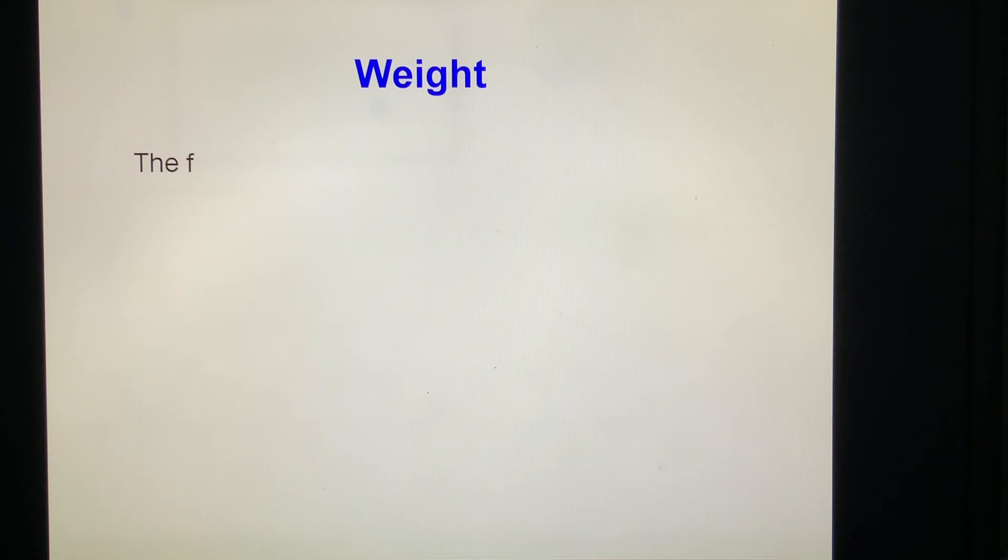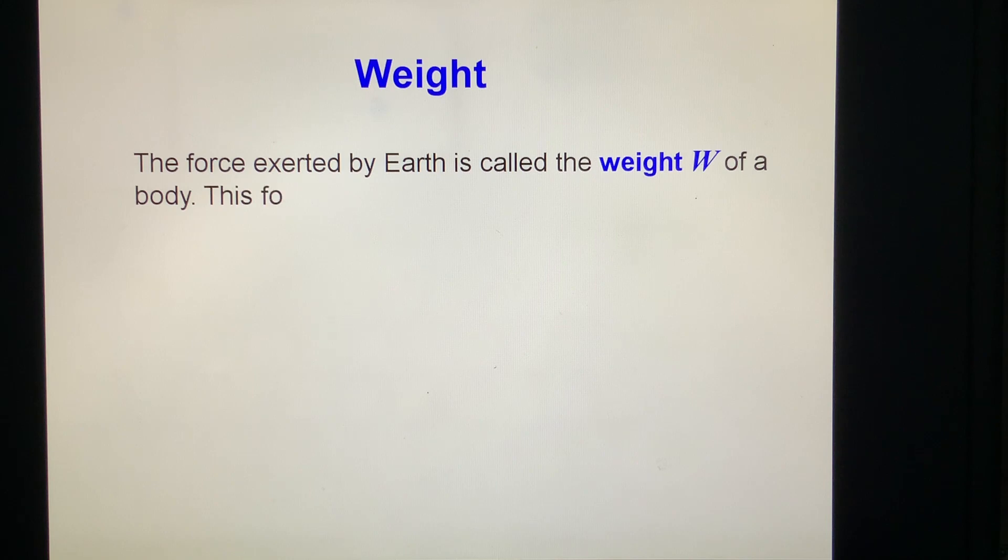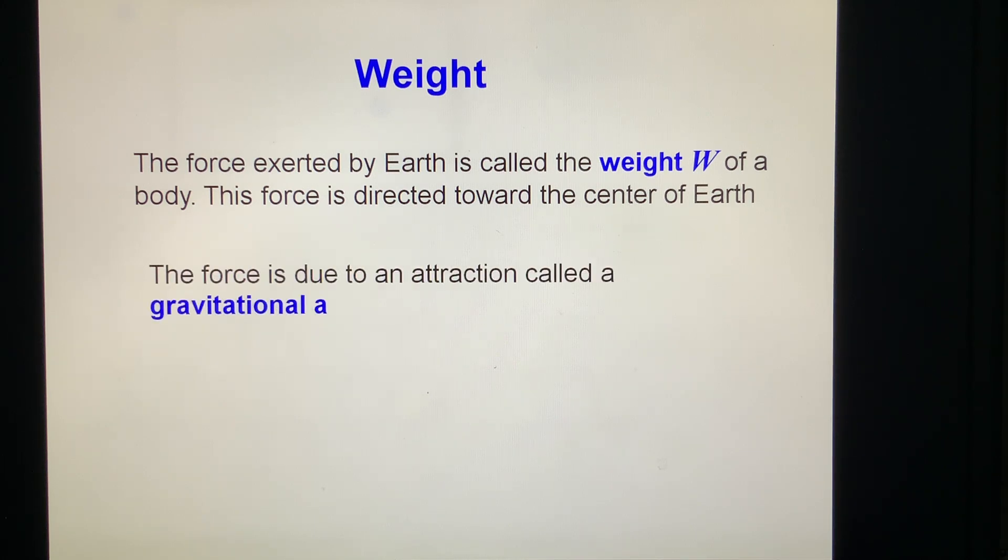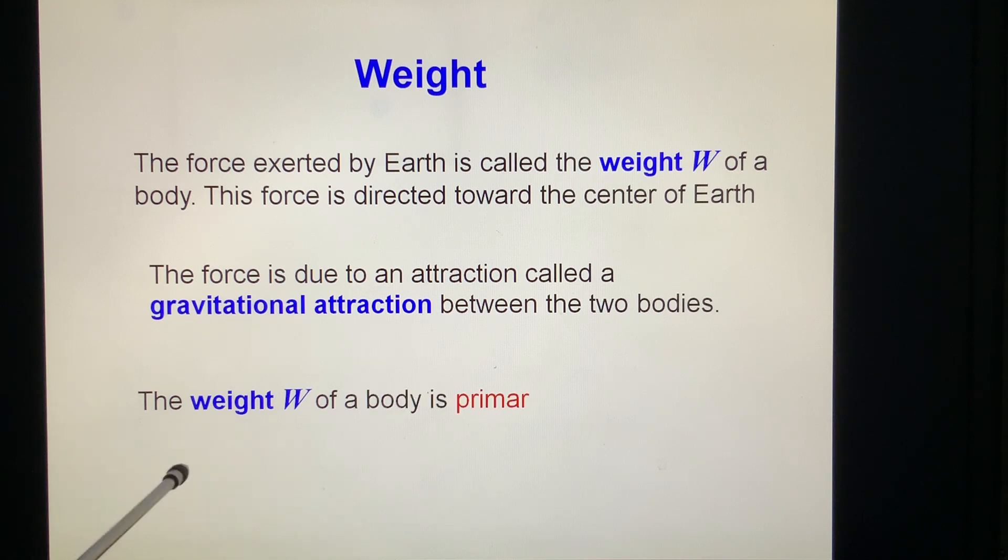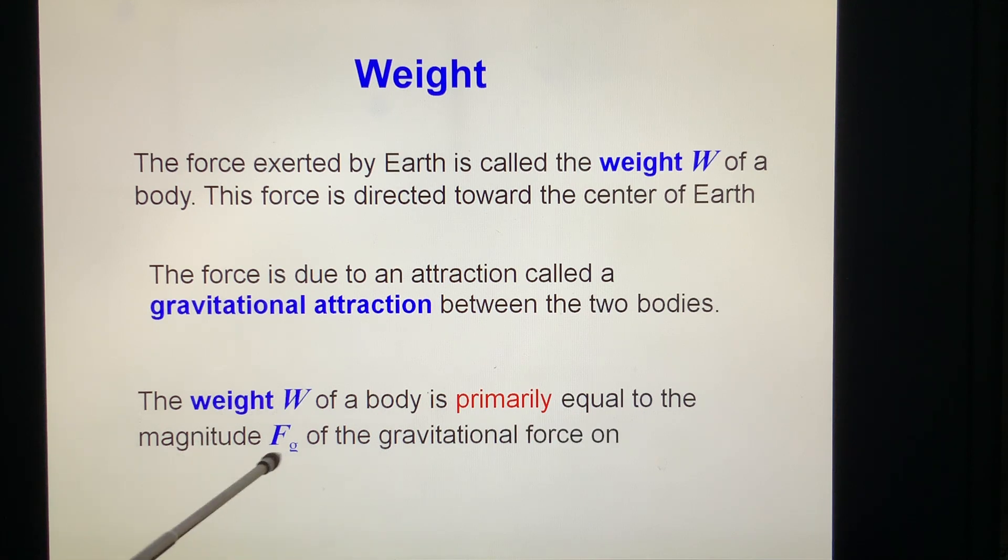Weight. The force exerted by Earth is called the weight w of a body. This force is directly toward the center of Earth. The force is due to an attraction called gravitational attraction between the two bodies. The weight w of a body is primarily equal to the magnitude Fg of the gravitational force on the body. Notice that primarily, we will talk about this in detail later.